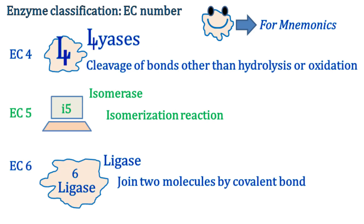EC4 stands for lyases. These are the enzymes that cleave various bonds by the means of hydrolysis and oxidation. EC5 stands for isomerases. These are the enzymes that catalyze isomerization reactions in a single molecule. And EC6 stands for ligases. These are the molecules that join two molecules with a covalent bond.